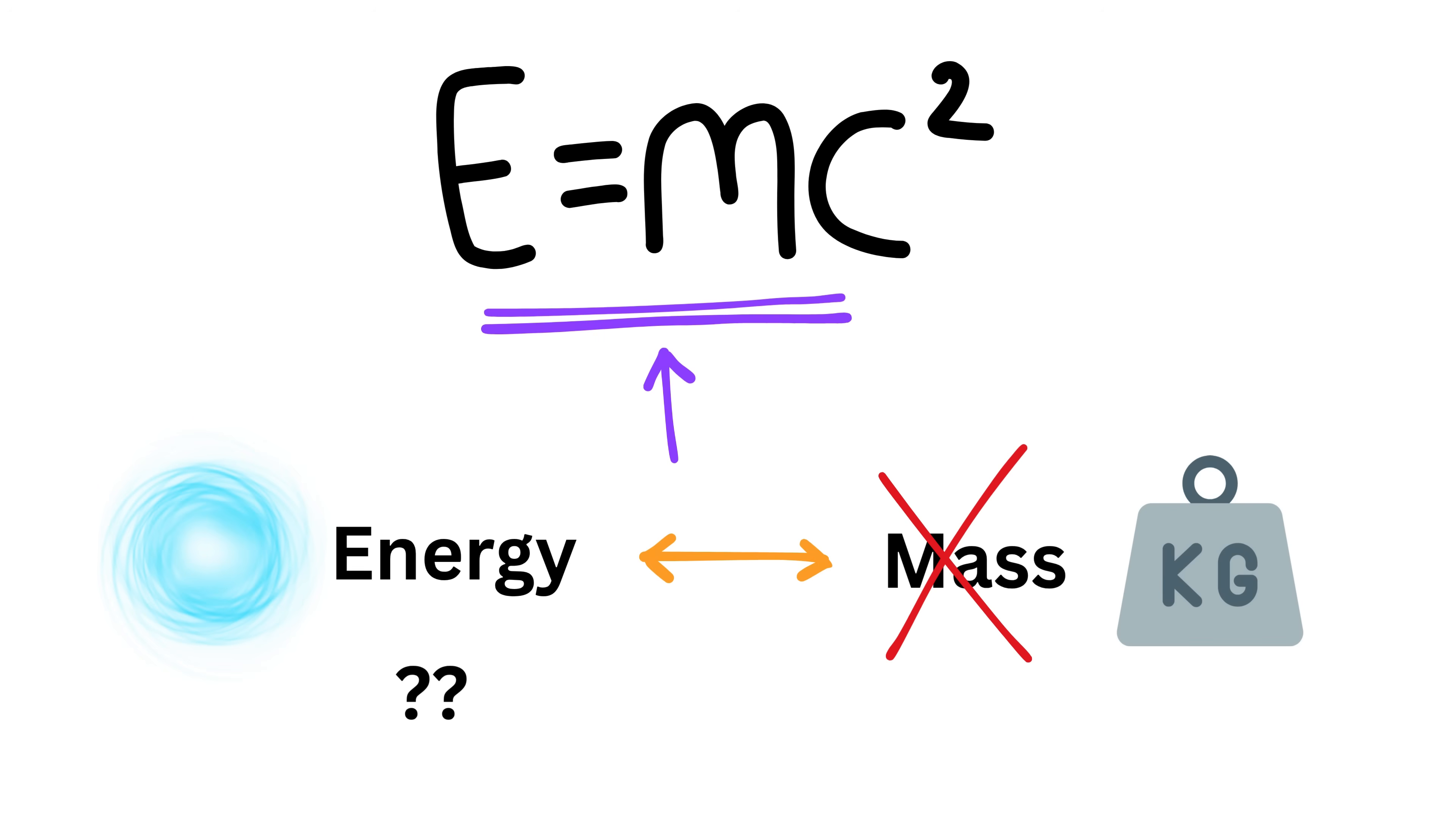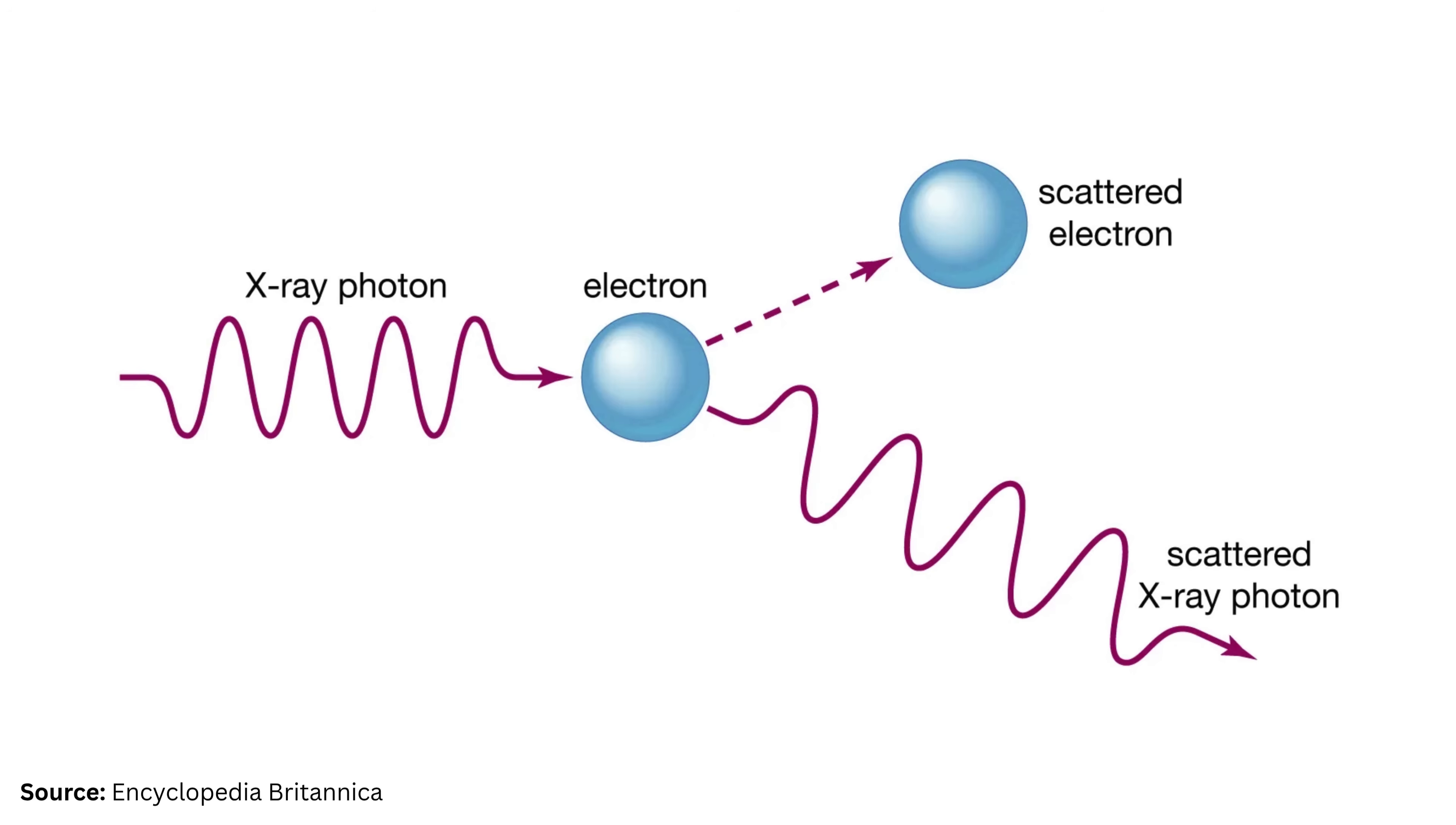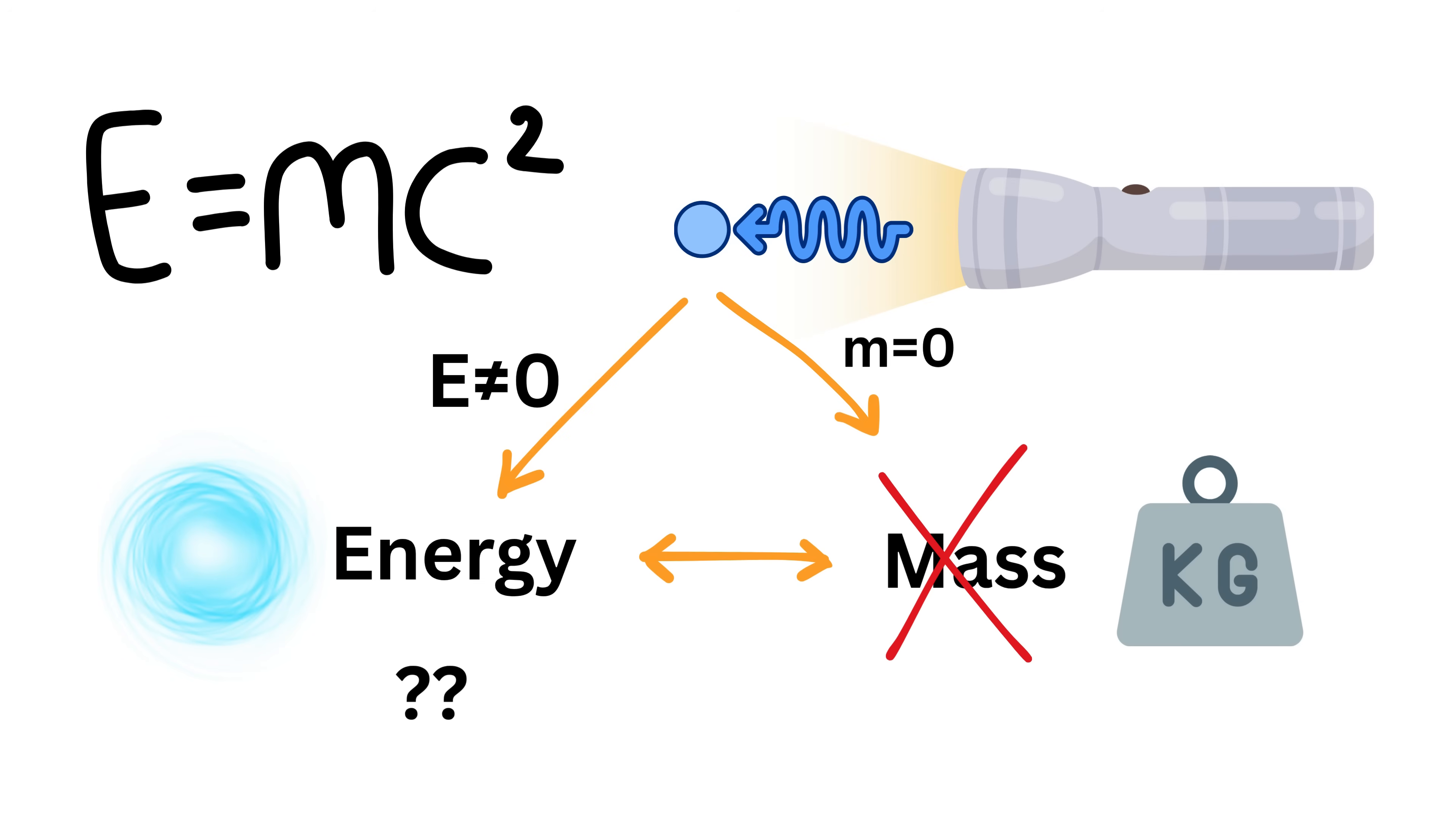Can they still have energy? Take light for example. It travels as tiny particles called photons, and experiments have shown that photons have zero mass. However, they clearly carry energy. They can heat objects, power solar panels, and even cause chemical reactions. This creates a problem because if mass is zero, the equation says energy should also be zero, which is clearly not true for light.